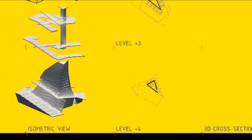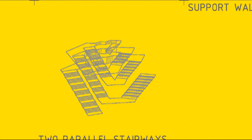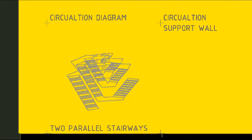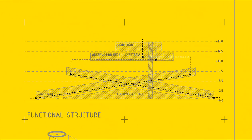The object works like a closed loop of stairways with two entrances, and functions around its vertical axis. Functions are: audio-visual hall, fan store, cafeteria with observation deck, and drink bar on the highest level.